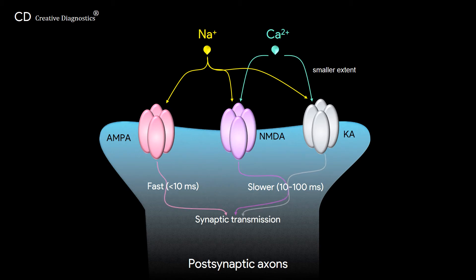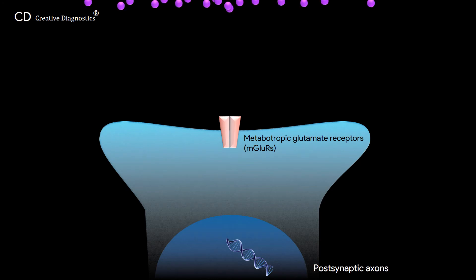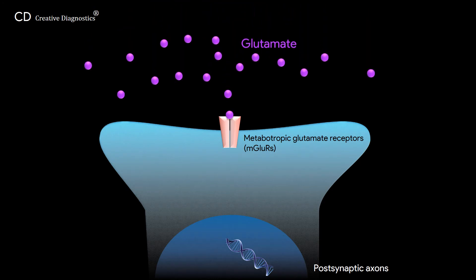Generally, AMPA receptors mediate fast synaptic transmission, while NMDA and Kainate receptors mediate slower synaptic transmission. In addition, glutamate can act on metabotropic glutamate receptors to modulate neuronal excitability and synaptic transmission. Metabotropic glutamate receptors are slower acting as they exert their effects indirectly through recruitment of second messenger systems, involving the processes of gene expression and protein synthesis.